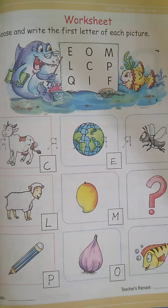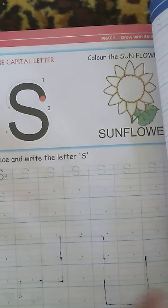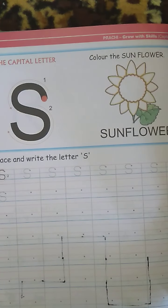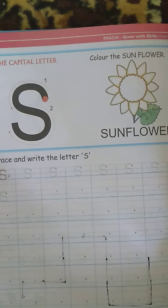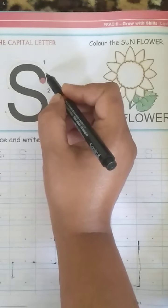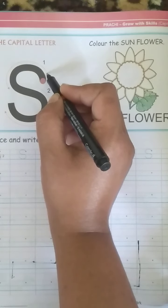Once you finish this, you will turn to page 96. So, which letter are we going to write today? It is the letter S. S for sunflower. S for snake. So, how do we write the letter S?